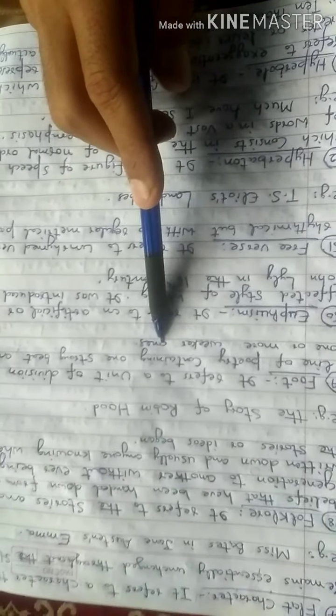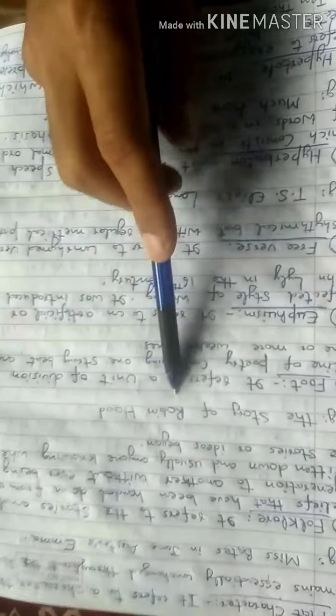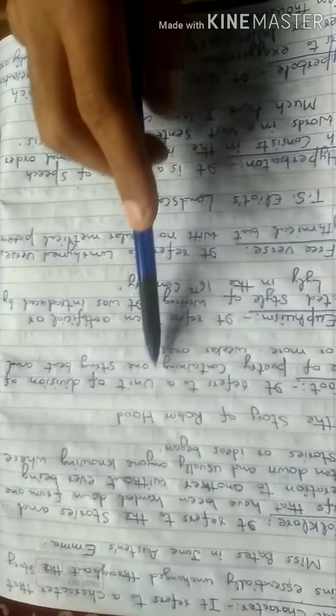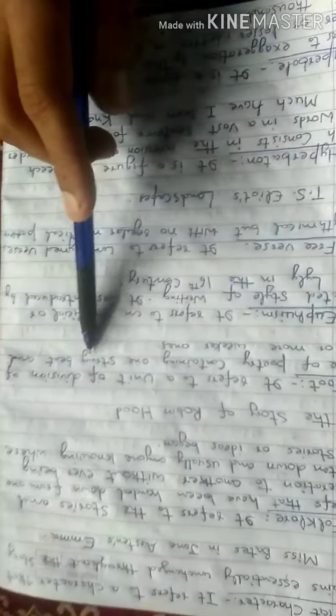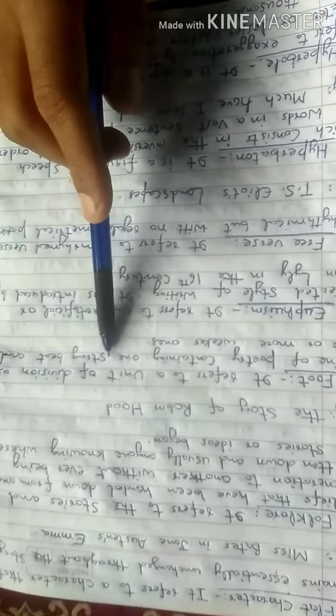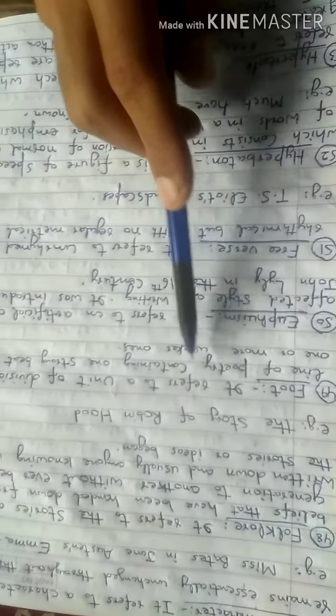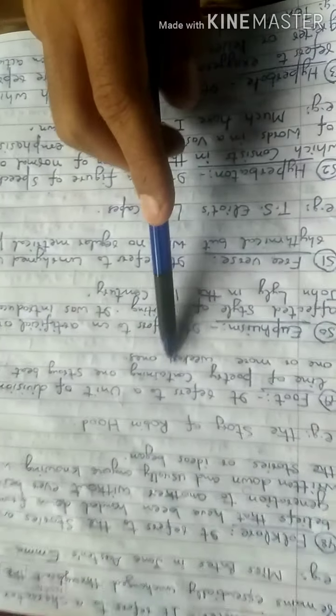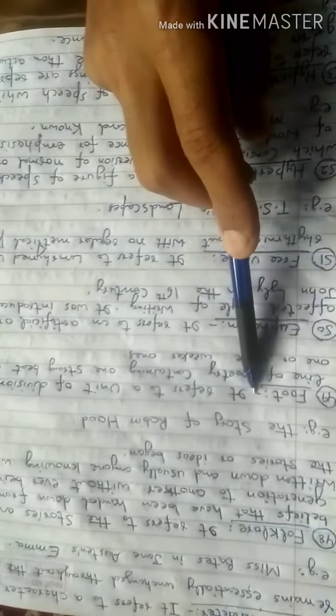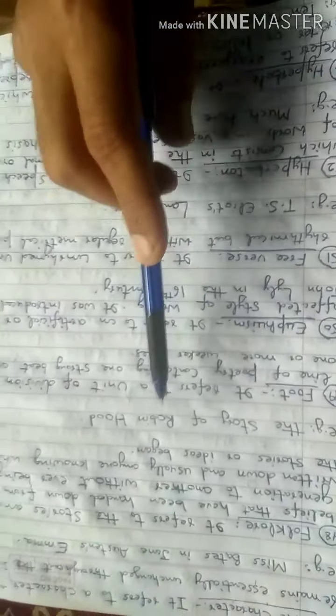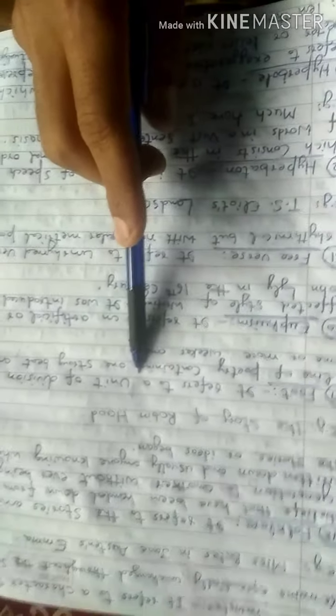Foot is a unit of poetry consisting of syllables, also known as beats. It consists of one stressed syllable followed by one or more unstressed syllables.